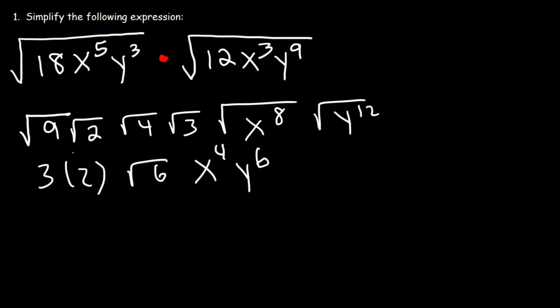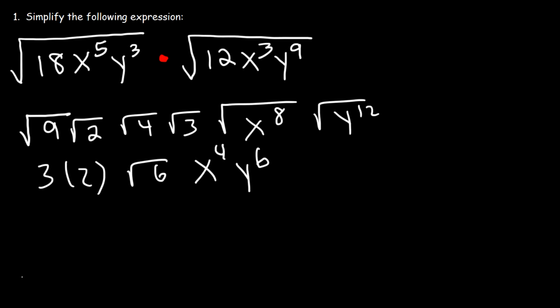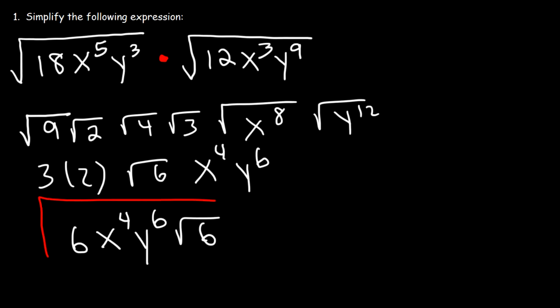So the final answer is going to be 3 times 2, which is 6. So it's 6x to the 4th, y to the 6th, times the square root of 6. And so this is the solution.